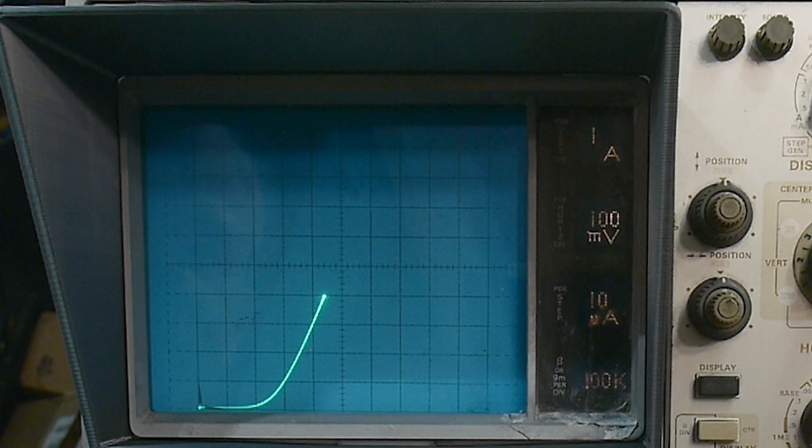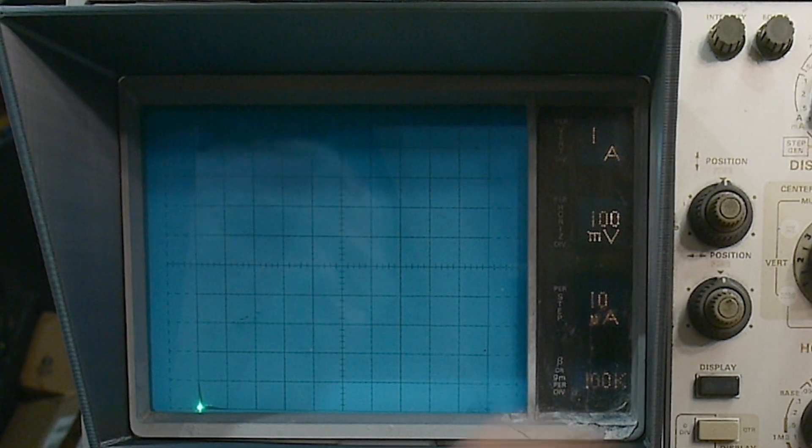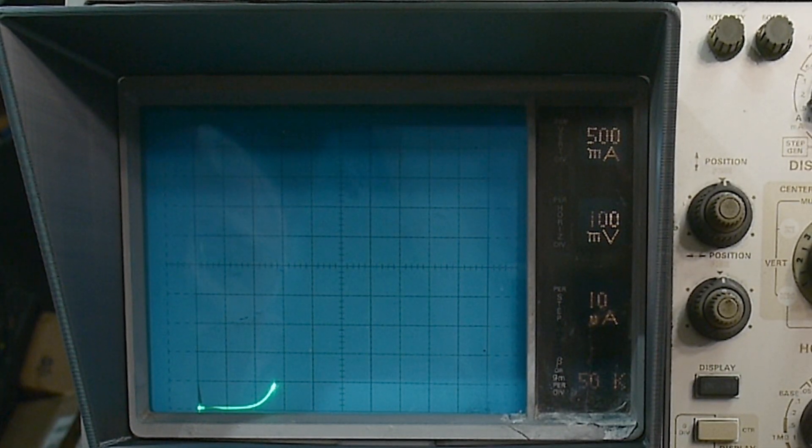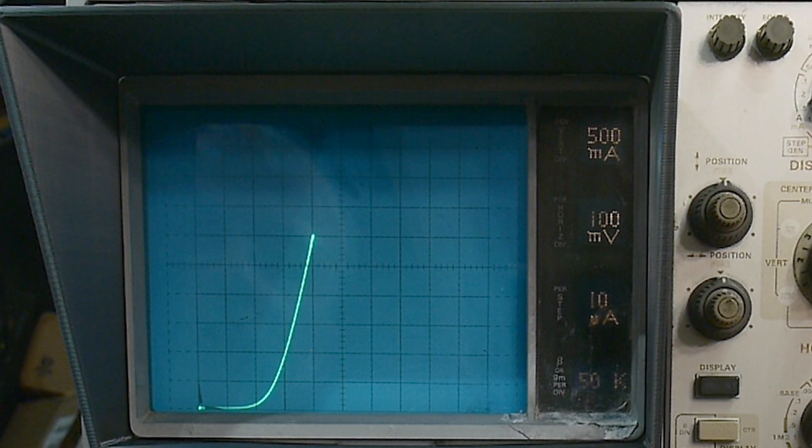Let's go back to 0.5. Here's 1 amp, 1.5 amps, 2 amps, 2.5 amps, 3 amps, now right at 0.4 volts.